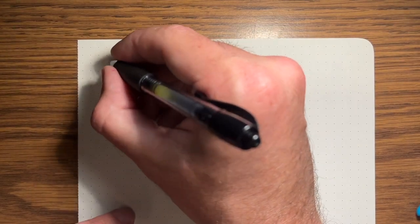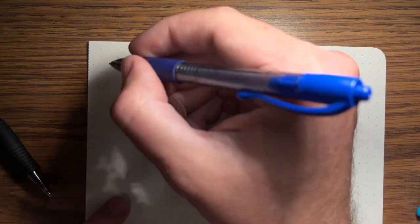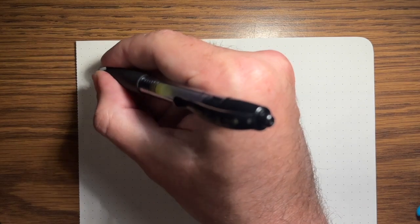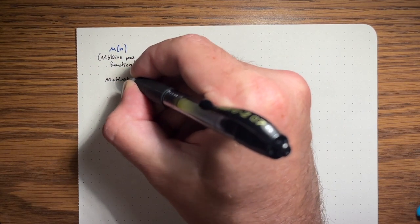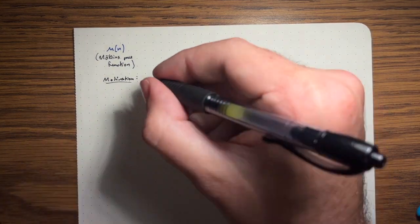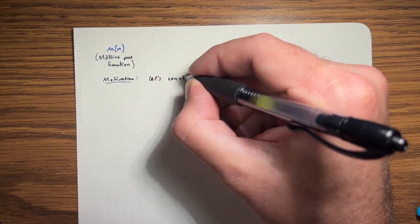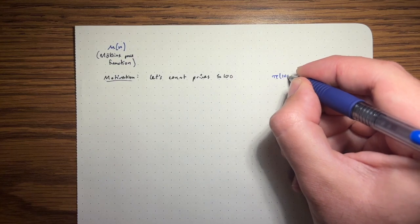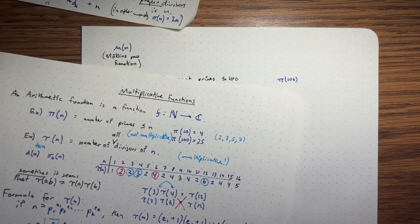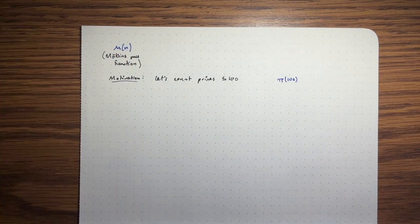Let's introduce one final arithmetic function: the Möbius mu function, mu(n). Before defining it, let's motivate it by trying to count primes less than or equal to 100 — that is, finding pi(100) — using a sieve-like approach.